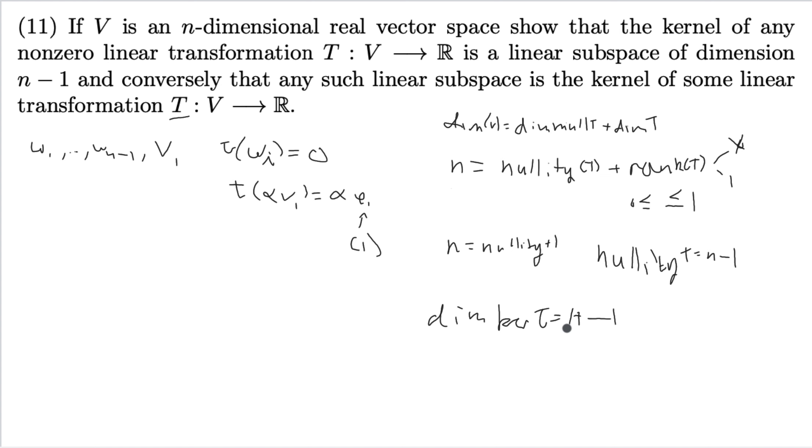Now the dimension of the kernel is n minus 1. We're done, because our goal was to show that the kernel of any non-zero linear transformation is a linear subspace of dimension n minus 1. And we've already proven the kernel is a linear subspace of the domain, and we've shown that dimension is n minus 1, so we're done. With that, thank you for watching.